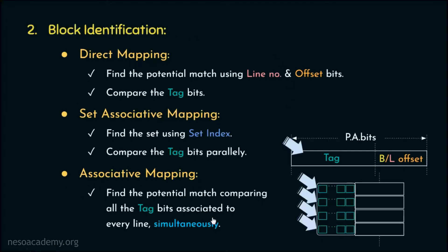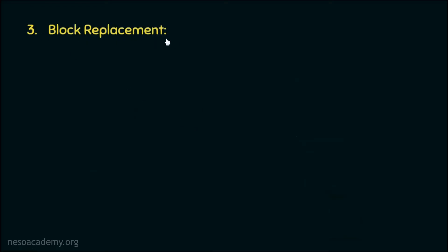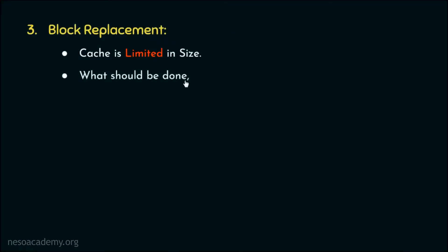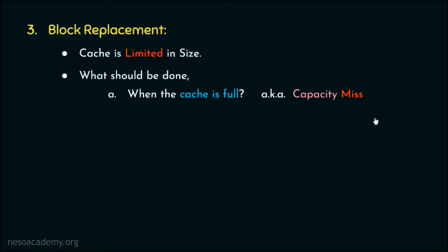We've already covered block placement and identification. Now let's talk about block replacement. The cache is limited in size, so during block replacement, the first question is: what should be done when the cache is full? This is known as a capacity miss — we are asking for a new block, but the cache is already full.